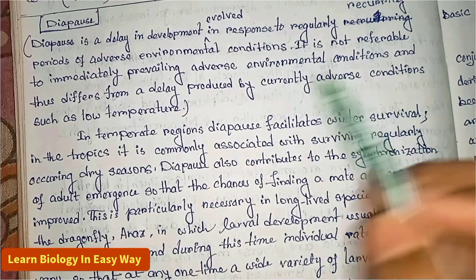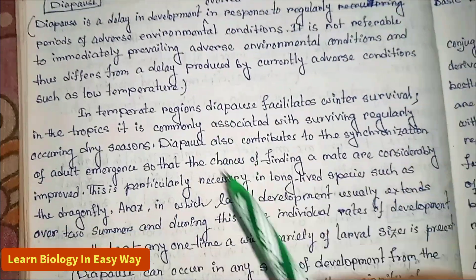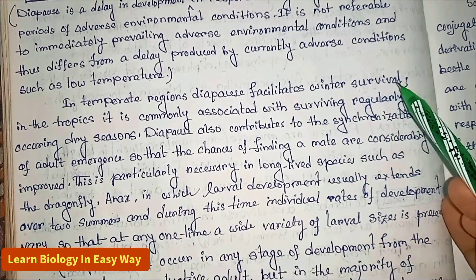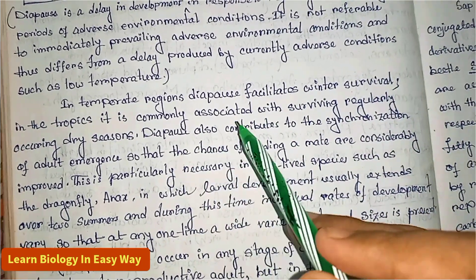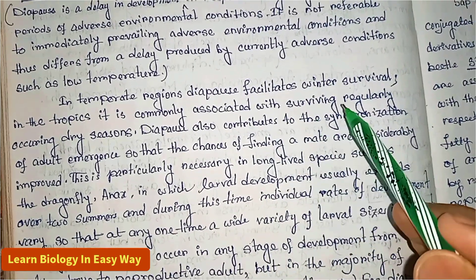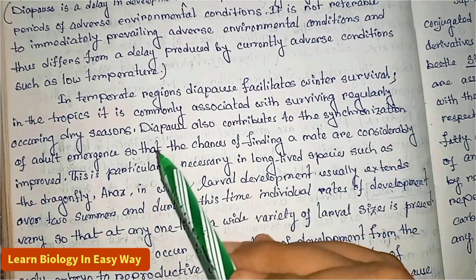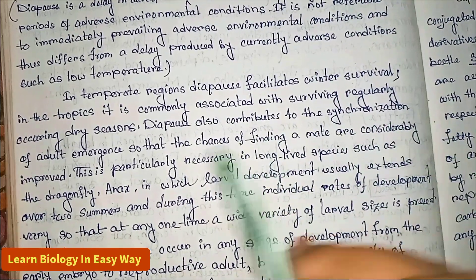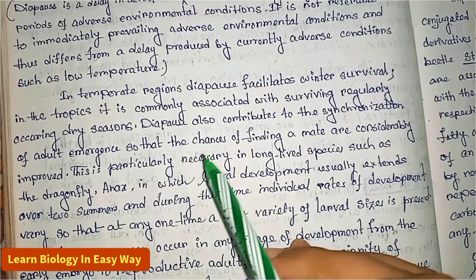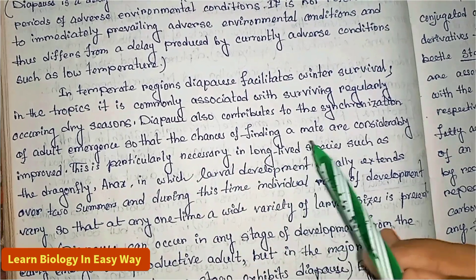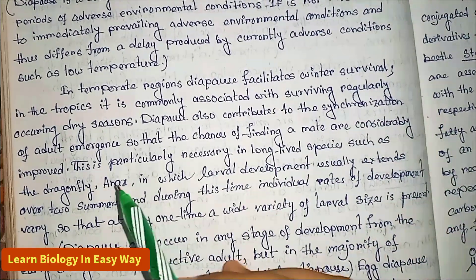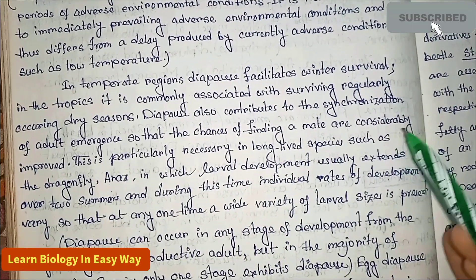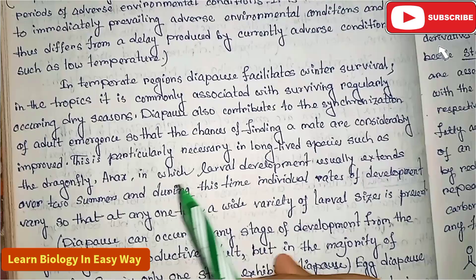In temperate regions, diapause facilitates winter survival. In the tropics, it is commonly associated with surviving regularly occurring dry seasons. Diapause also contributes to the synchronization of adult emergence, so that the chances of finding a mate are considerably improved. This is particularly necessary in long-lived species such as the dragonfly.